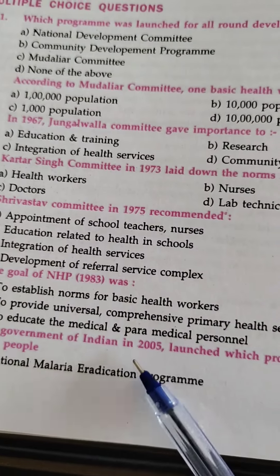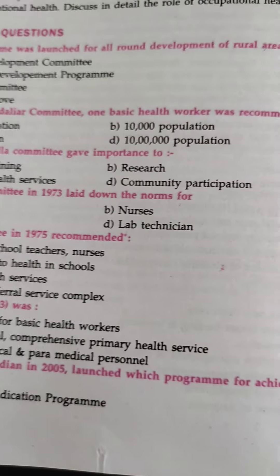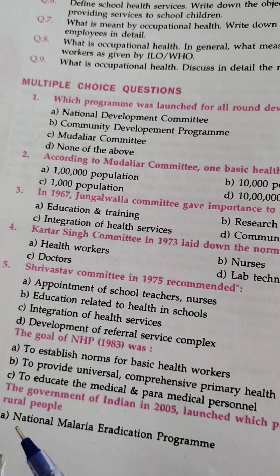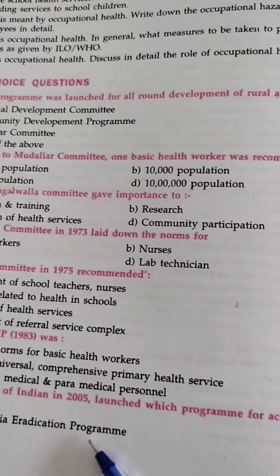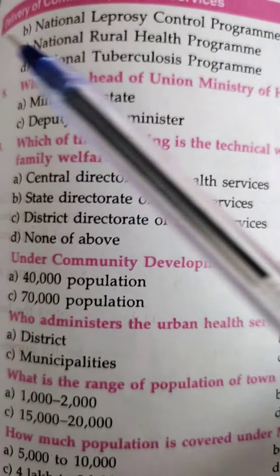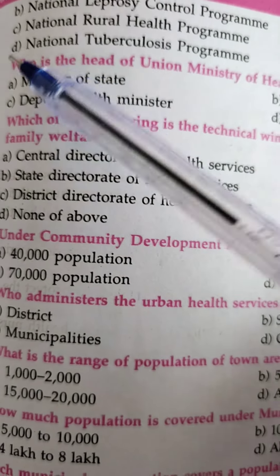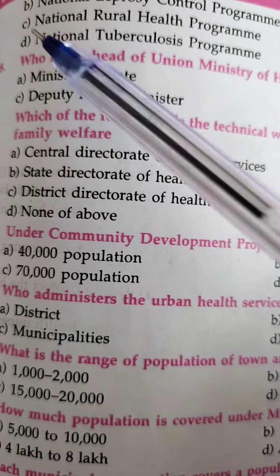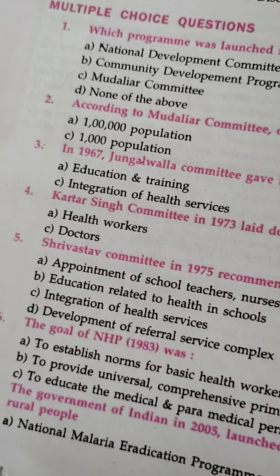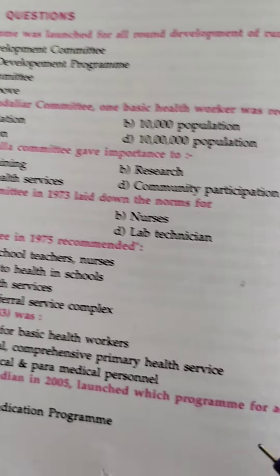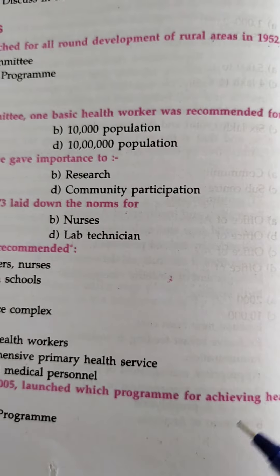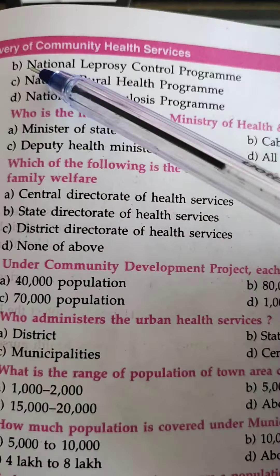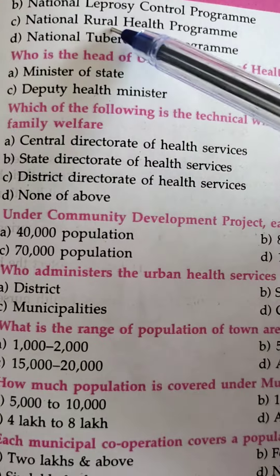The Government of India in 2005 launched a program for achieving health of rural people. Options: National Malaria Eradication Program, National Leprosy Control Program, National Rural Health Program, National Tuberculosis Program. The answer is: National Rural Health Program.